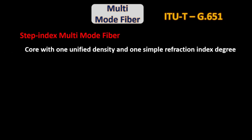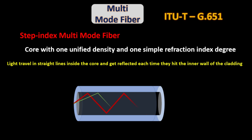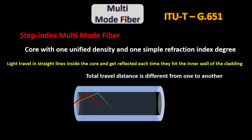What is step index fiber? It has a core with one unified density and one simple refraction index degree. When light beams travel through, they travel in straight lines inside the core and get reflected each time they hit the inner wall of cladding — in other words, light beams travel in a zig-zag motion. As the light beams travel at variant angles, the total travel distance is different from one to another, and the end delivery delay is long.